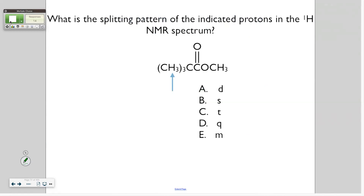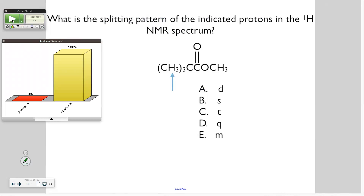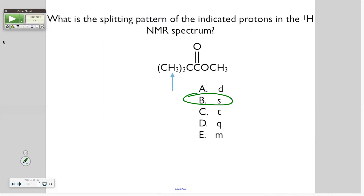IR is very different from NMR. The hardest part of IR is getting used to it. The next hardest part is to not try to come up with something for every single peak. You have to realize which peaks are important — and that takes practice.